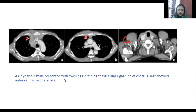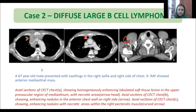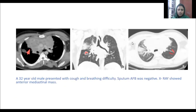In the next case, a 67-year-old male presented with swelling in the right axilla and right side of his chest. X-ray showed an anterior mediastinal mass. CT chest showing homogeneously enhancing lobulated soft tissue lesion in the upper pre-vascular region of the mediastinum with necrotic areas. Axial CT chest images showing enhancing nodules in the anterior chest wall on the right side, as well as in the right pectoralis major with a few necrotic areas. Biopsy revealed large B-cell lymphoma.